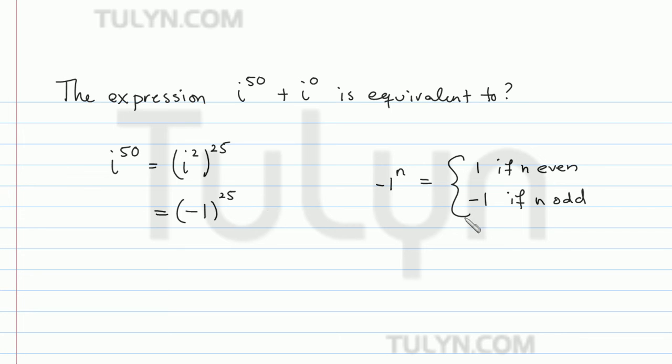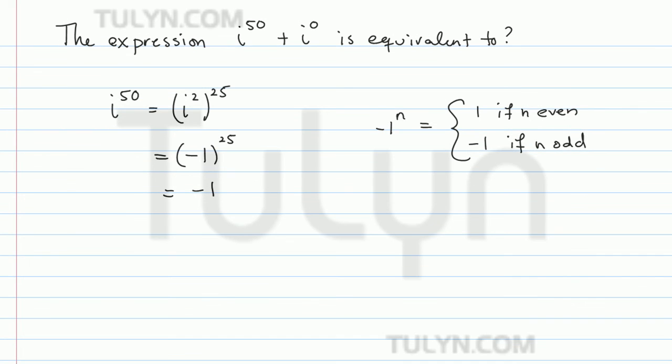So in this case, since 25 is an odd number, this is going to simplify to just negative 1. So now we've got i to the 50th power. So the second term, i to the 0th power.